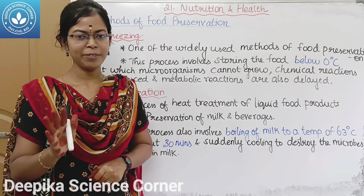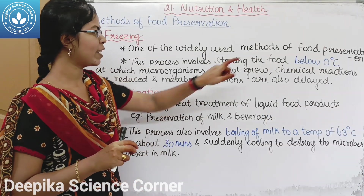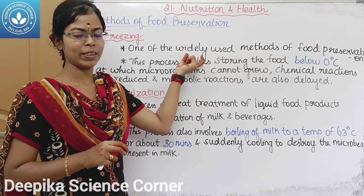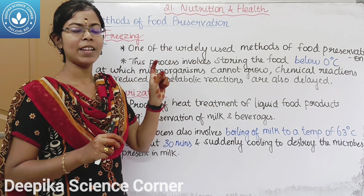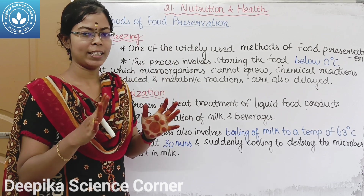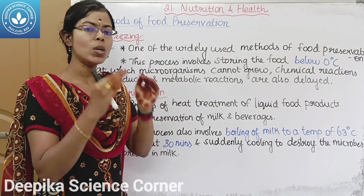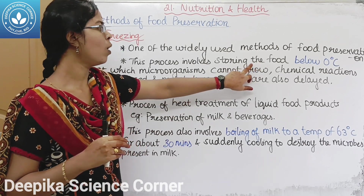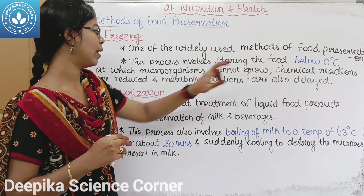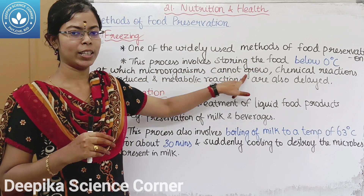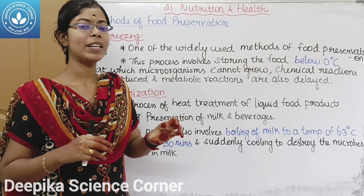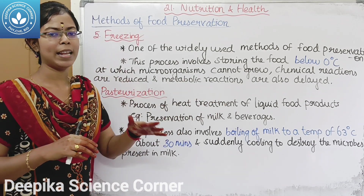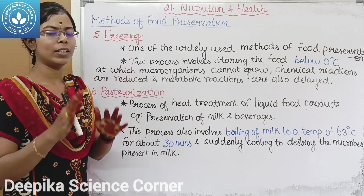The fifth method is freezing. In freezing food preservation, ice forms and food is frozen below 0 degrees Celsius. At this low temperature, microorganisms cannot grow, and chemical reactions and metabolic reactions are reduced and delayed.